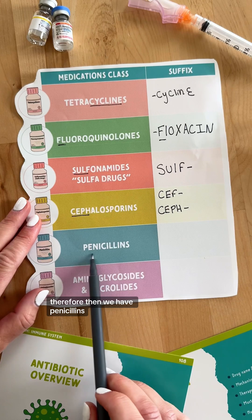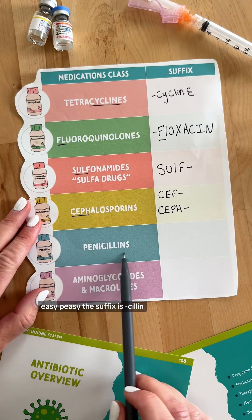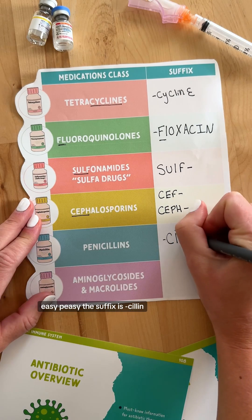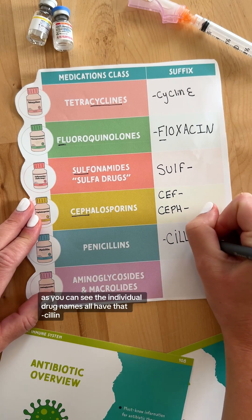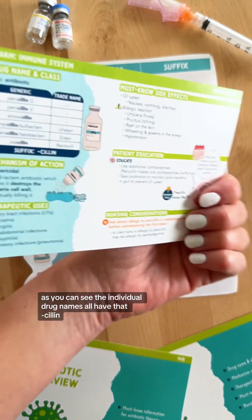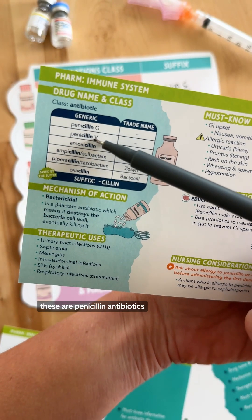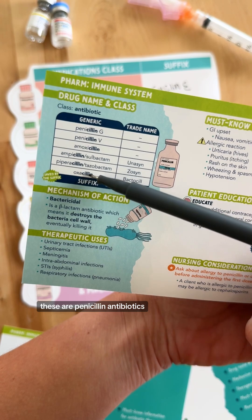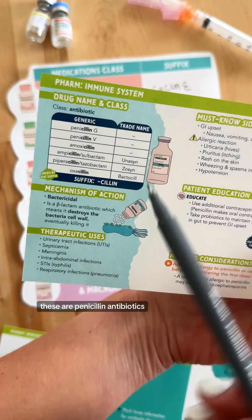Then we have penicillins — easy peasy. The suffix is -cillin. The individual drug names all have that -cillin ending, so you can easily recognize these are penicillin antibiotics.